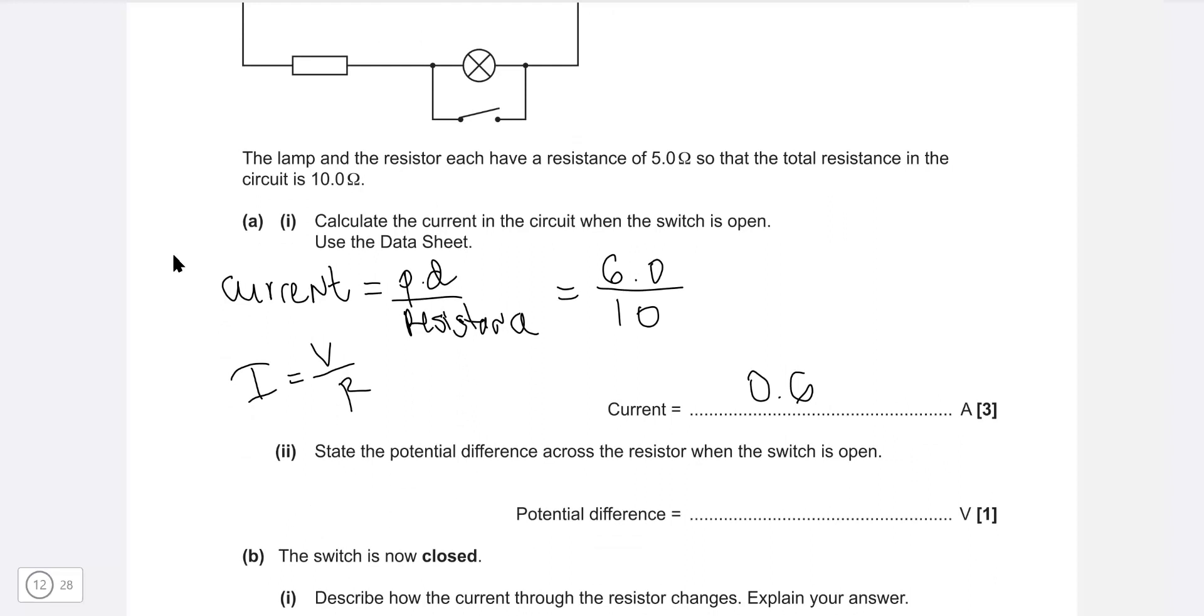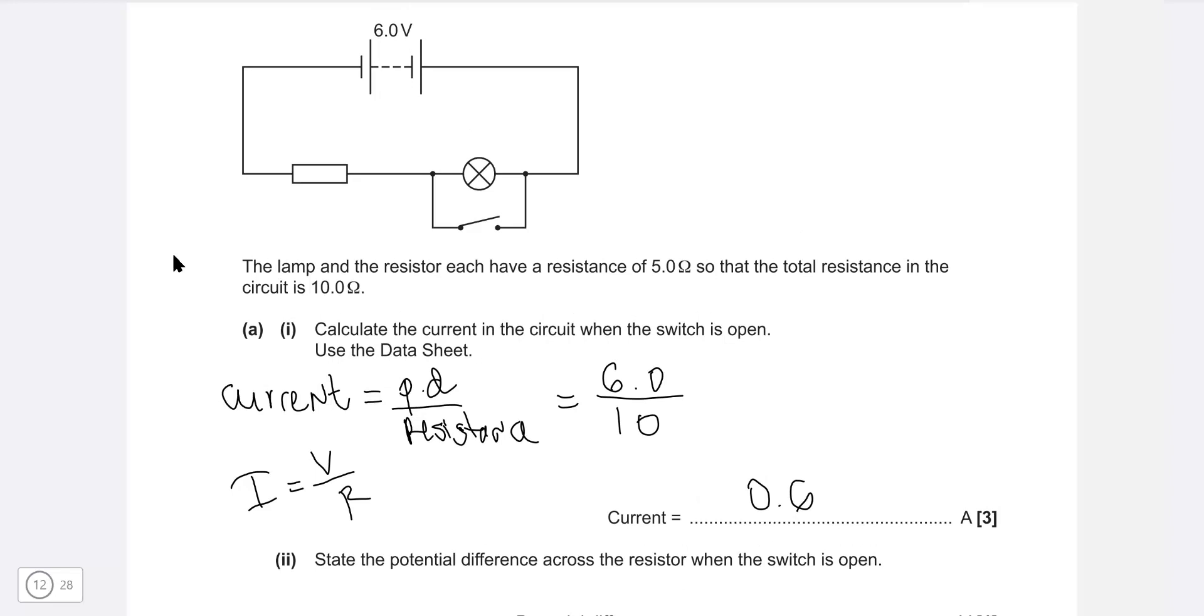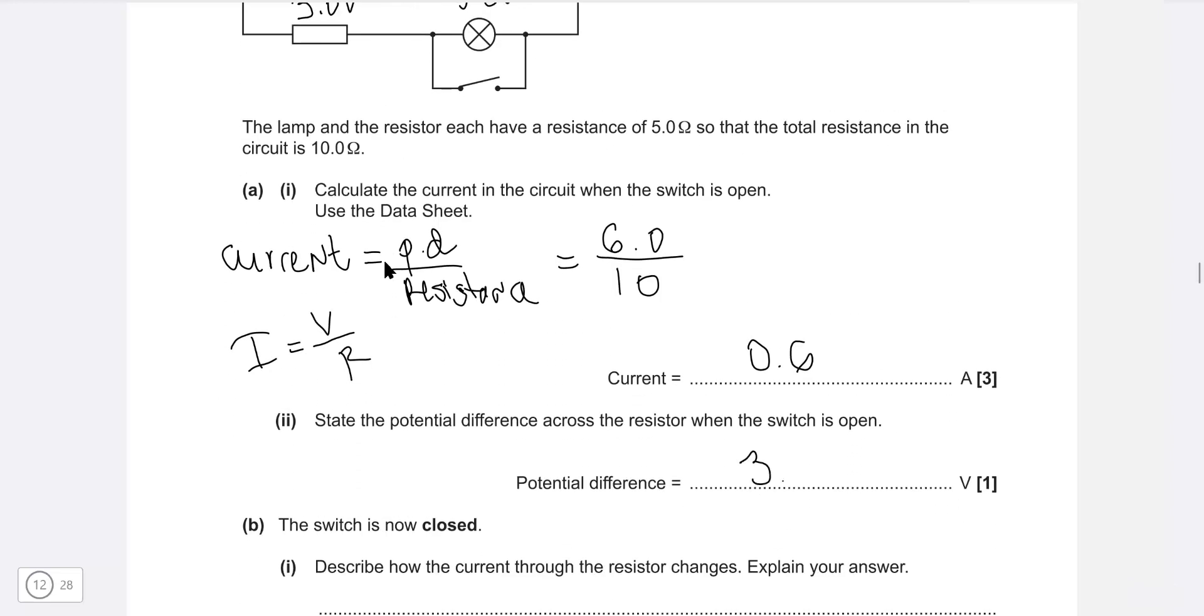Next one: state the potential difference across the resistor when the switch is open. If they have the same resistance, they will share the same amount of the potential difference. So if the resistance is exactly the same, which is 5 ohms, then each of them are going to share 3 volts. So the potential difference across the resistor will be 3.0 volts.